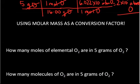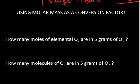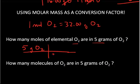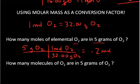Let's look at another example using molar mass as a conversion factor: how many moles of elemental oxygen are there in 5 grams of oxygen? We need to remember that elemental oxygen is O₂, and 1 mole of O₂ equals 32 grams of O₂. Starting with 5 grams of O₂, I multiply by the per expression with grams on the bottom so that grams cancel and I'm left in units of moles. When I put it in my calculator, I get 0.2 moles of oxygen.